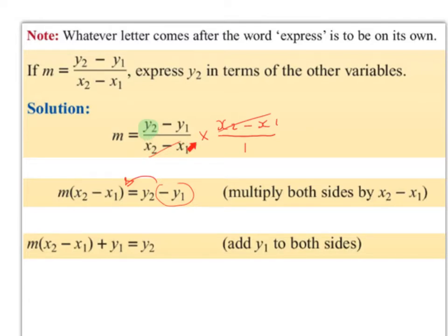Another way of looking at it is that we bring this denominator under the equal sign and stick it onto the m — so we multiply both sides by (x2 minus x1). Now the only thing we have to do is bring this minus y1 over the equal sign and it becomes positive y1, or we could say we add y1 to both sides. So now we have y2 on its own: y2 equals m times (x2 minus x1) plus y1.